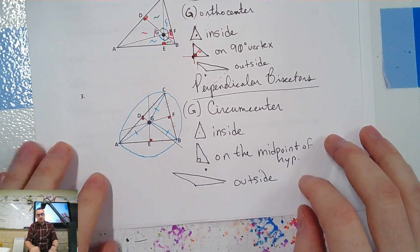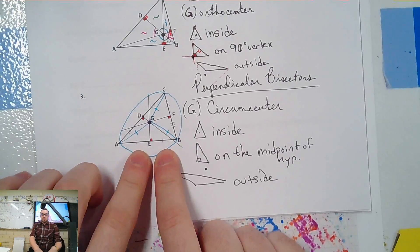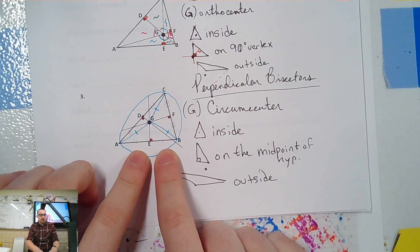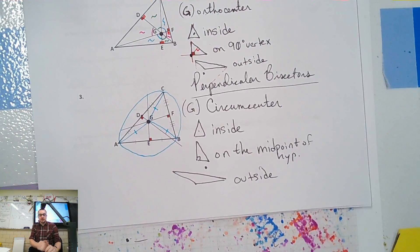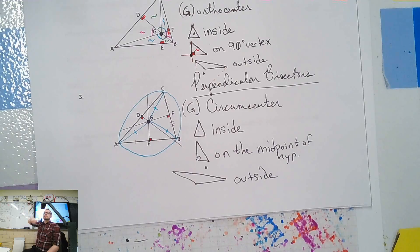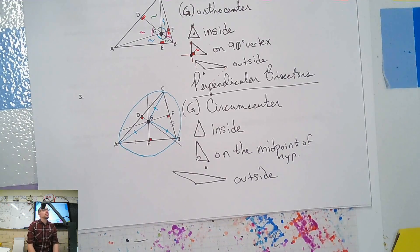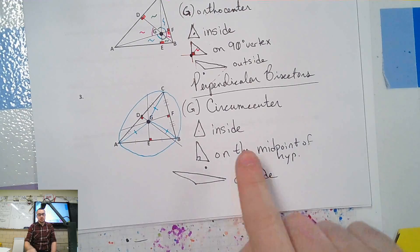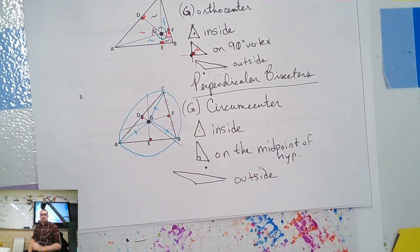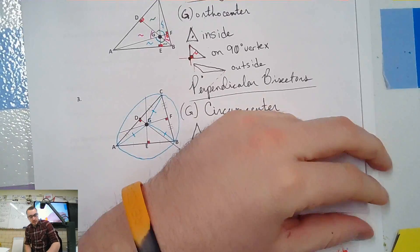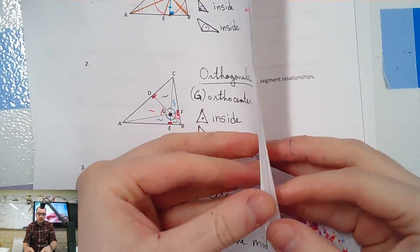Perpendicular bisectors are bisectors of segments — not angle bisectors — and they go up at a perpendicular angle. They create the circumcenter. Circum means to go around, and scribe means to write. So it's the circumcenter of a circumscribed circle.